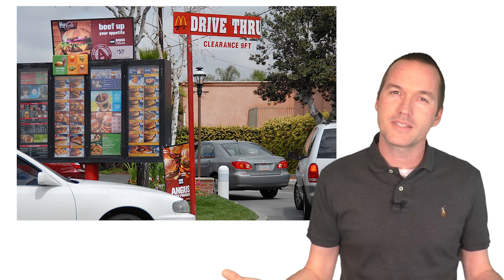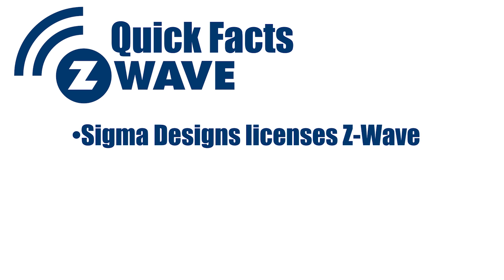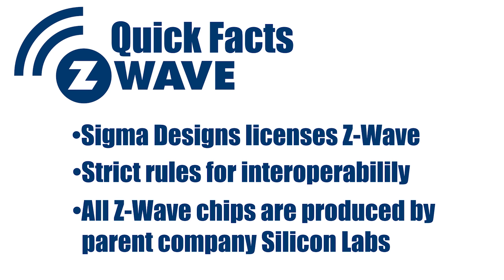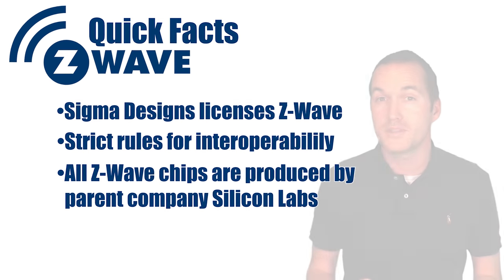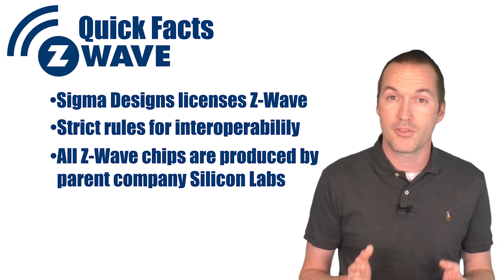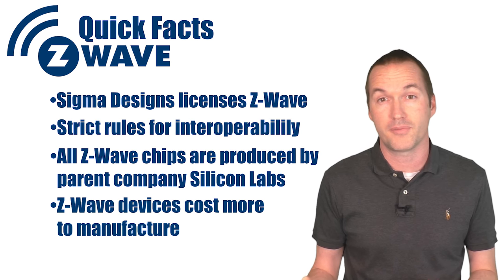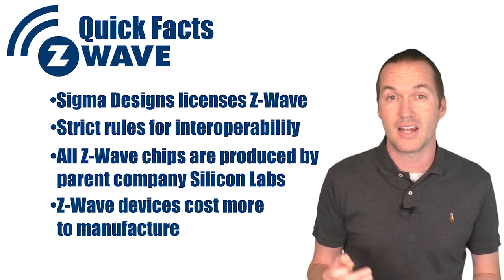Z-Wave is a proprietary technology run by a company called Sigma Designs. If your device says Z-Wave on it, it means it's licensed by Sigma Designs and the manufacturer had to adhere to strict protocol rules to ensure maximum compatibility between devices. Sigma even exercises control over who can produce Z-Wave chips, which are all produced by Silicon Labs. The upside is an extremely standardized protocol where Z-Wave devices always communicate with a Z-Wave hub regardless of brand, but the downside is that Sigma can charge more for chips and licensing, resulting in a higher cost per device.